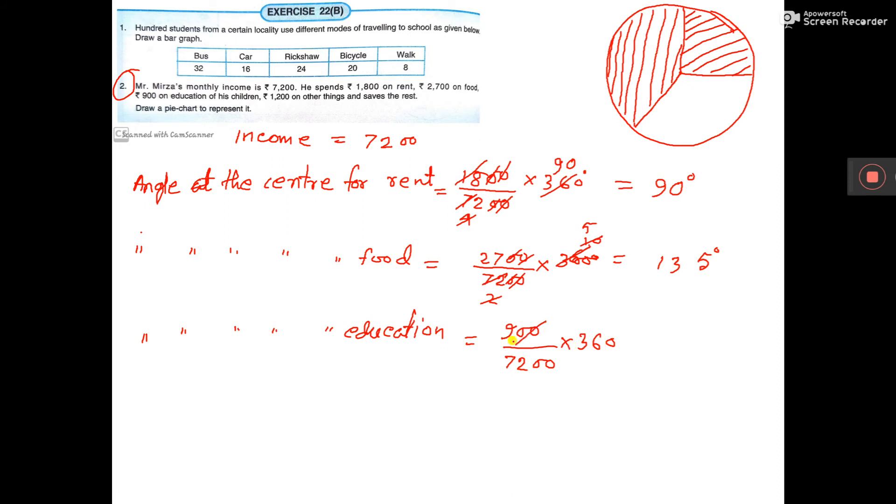So zeros cancel, 9 into 72 is 45 degrees. So again from here you draw 45 degrees. So this is the 45 degree angle.